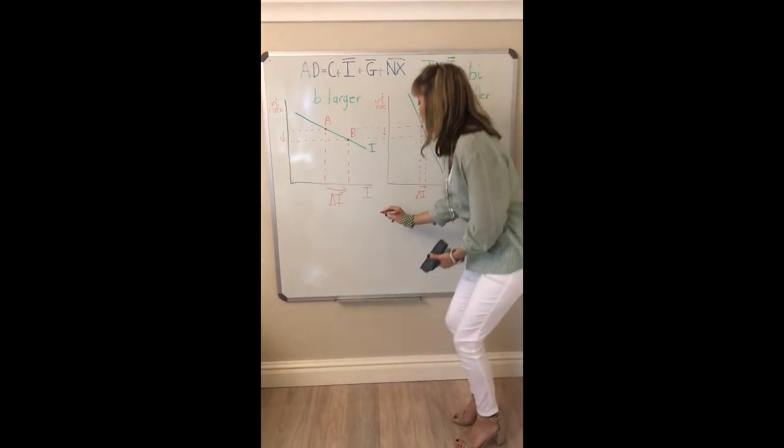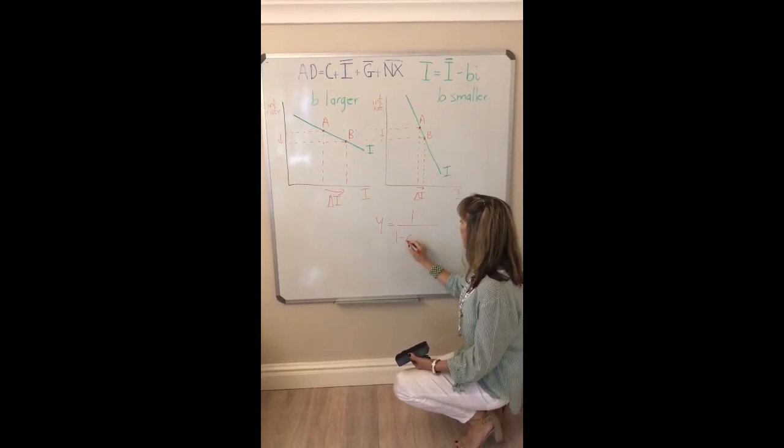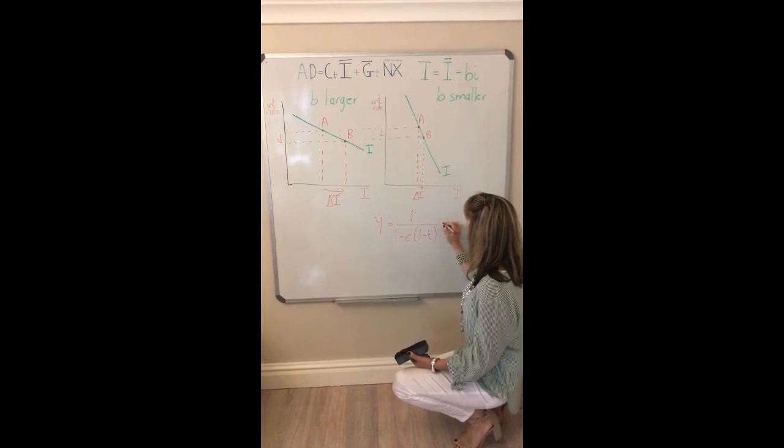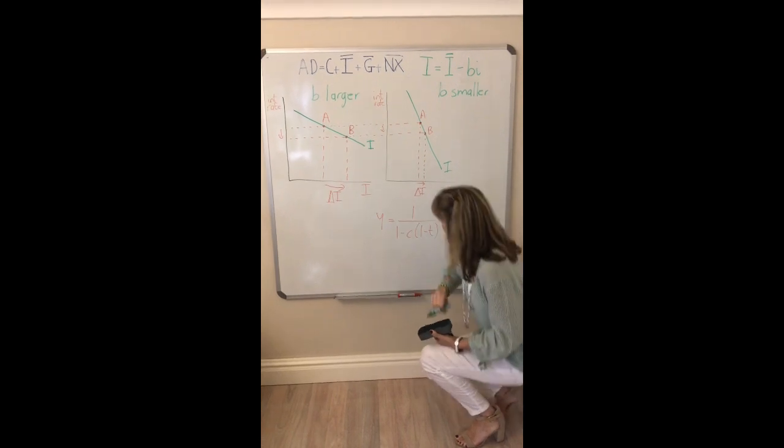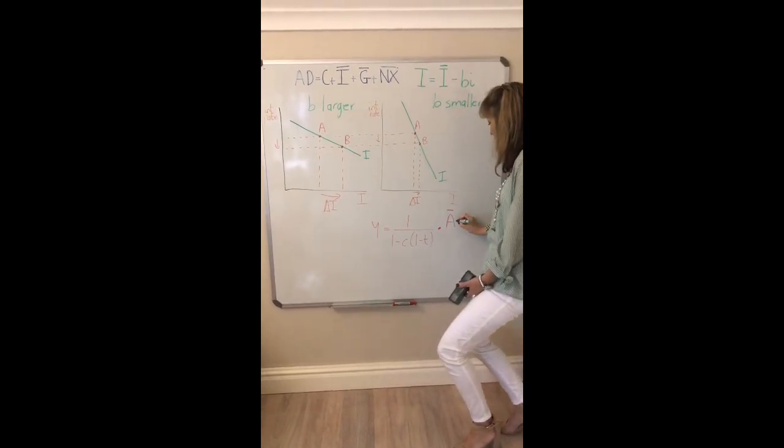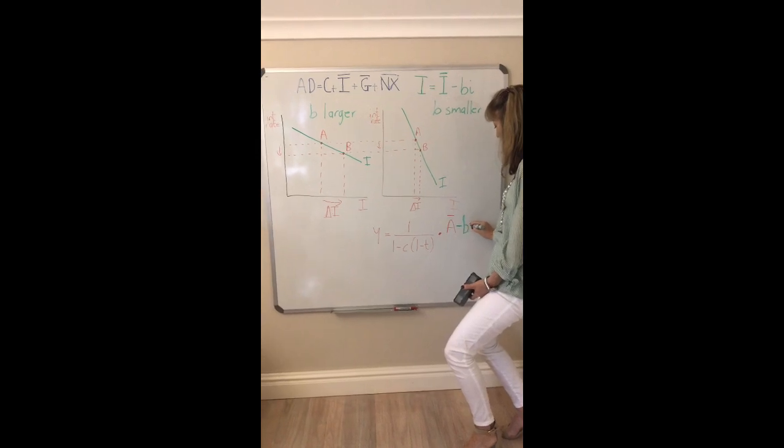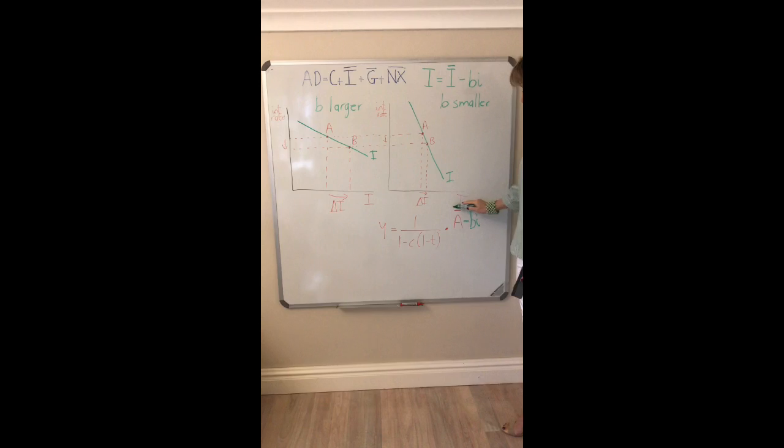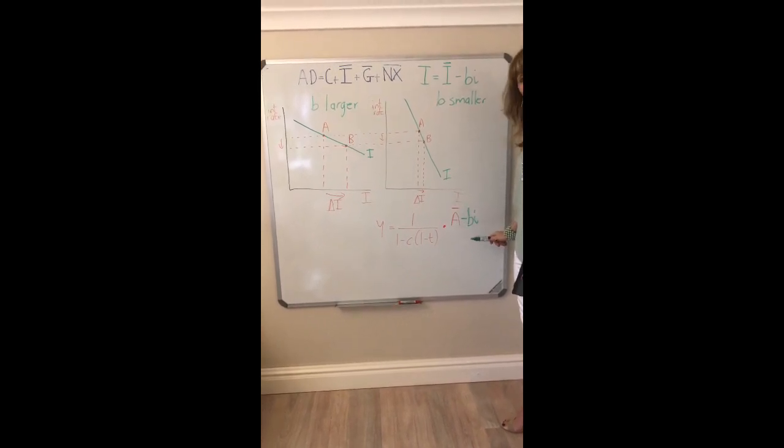So for instance, if we think about our equilibrium level of income, it was equal to the multiplier, the presence of government with the proportional tax, times by the total level of autonomous spending. So once again, it's the same. The only difference though, is you need to subtract this B I from your total level of autonomous spending. And in fact, this component here, A bar minus B I, is also the intercept of the aggregate demand curve.